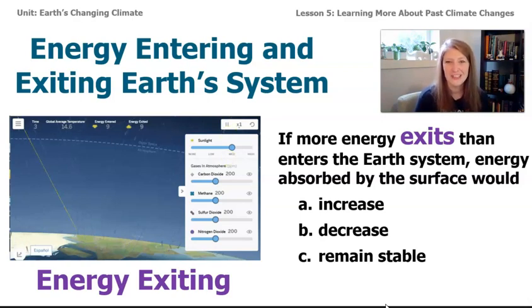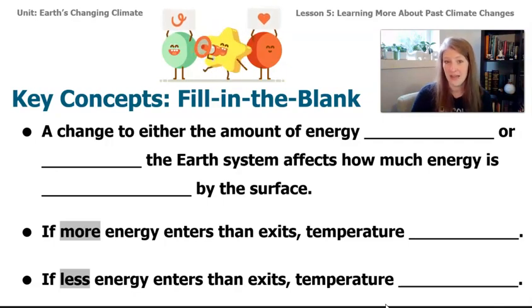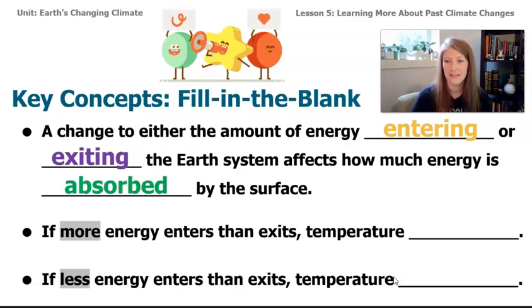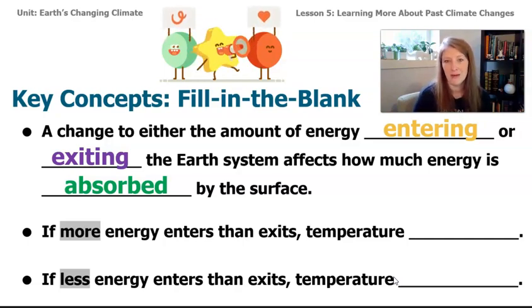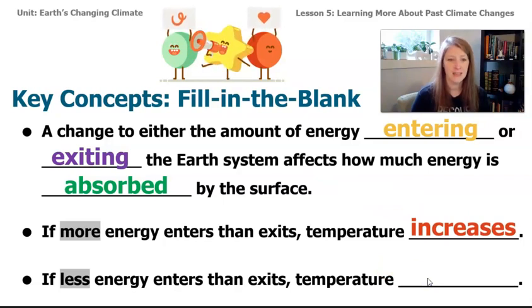We've figured out our first key concept for today's lesson. How would you fill in the blank? A change to either the amount of energy — entering or exiting — Earth's system affects how much energy is absorbed by the surface. The word 'absorbed' just means to take something in, like water absorbed by a paper towel. If more energy enters than exits, temperatures increase. If less energy enters than exits, temperature decreases.